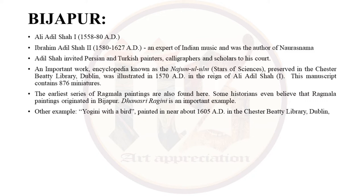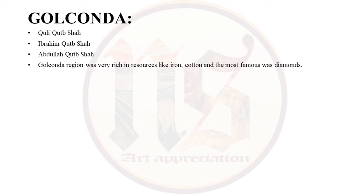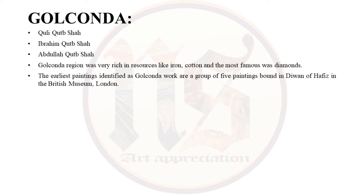Our third sub-school is Golkonda. The main patrons were Quli Qutub Shah, Ibrahim Qutub Shah and Abdullah Qutub Shah. This region was very rich in resources like iron, cotton, and most famously diamonds. Trade flourished here and extended as far as Europe. Even portraits of the sultans were carried by Dutch merchants to Europe, making Deccani art popular outside India. The earliest paintings identified as Golkonda work are a group of 5 paintings bound in a Diwan of Hafiz, now in the British Museum, London, painted during the period of Sultan Abdullah Qutub Shah around 1630 AD.